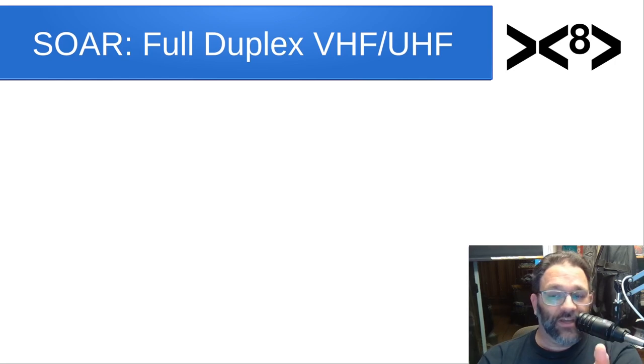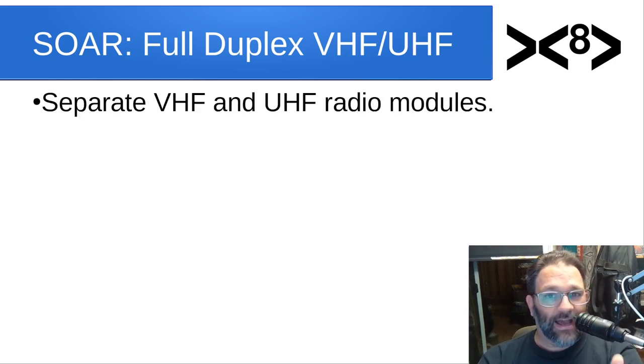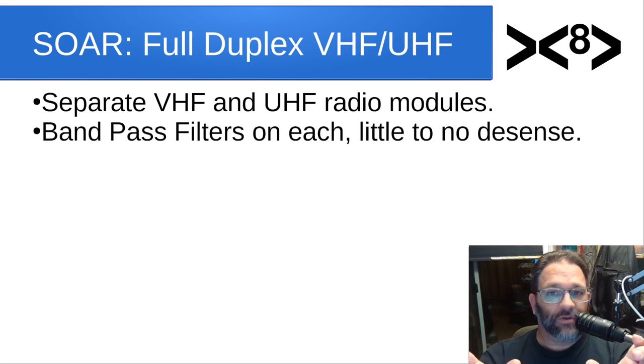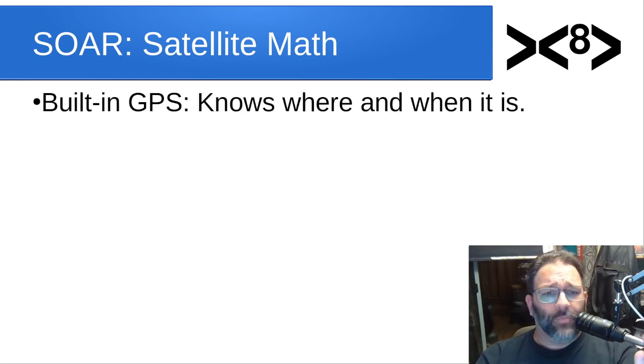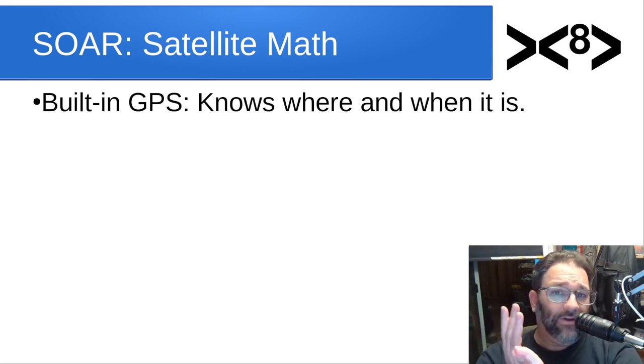So what does SOAR do? The first thing it addresses is the full duplex VHF UHF. I want to make a radio that you can buy now for inexpensive that has separate VHF and UHF radio modules that can operate completely independently of each other and then put a band pass filter on those so that there's no desense. When you're transmitting on one, it doesn't desense the receiver on the other one. So you can transmit and receive at the same time. Similarly, it's got a microcontroller in it right now. It's a Teensy 4.1, incredibly powerful microcontroller, 600 megahertz, 32 bit processor. This is way more powerful than some of the servers I've had just a decade or two ago.